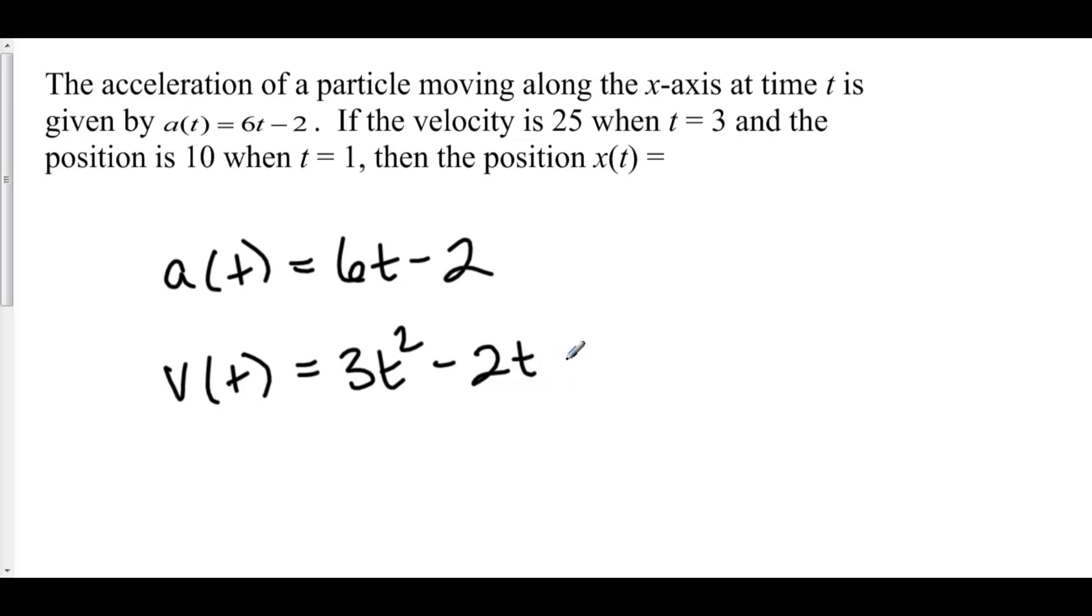We include the plus c because there are an infinite number of possibilities for our velocity function that when you take the derivative would yield this particular acceleration function. And the reason is because the derivative of c, some constant, is equal to zero.